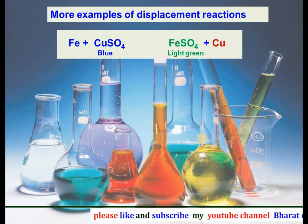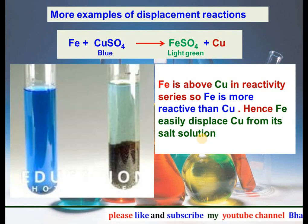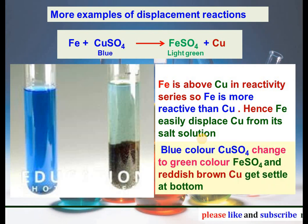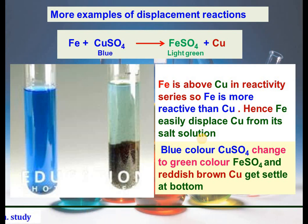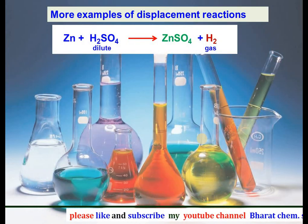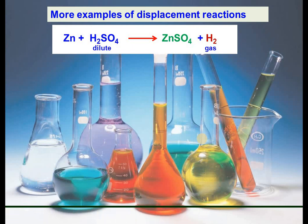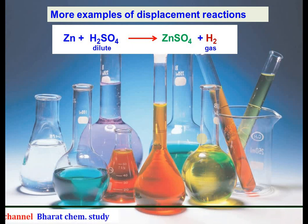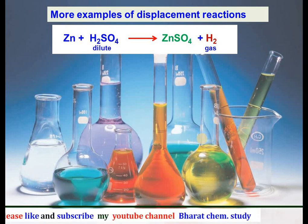Another example of displacement reaction: iron when added to copper sulfate gives ferrous sulfate plus copper. Iron is above copper in the reactivity series, so iron displaces copper from its salt solution. The observation is that the blue color of copper sulfate changes to the green color of ferrous sulfate and reddish-brown copper settles at the bottom. Similarly, when zinc reacts with sulfuric acid it forms zinc sulfate and hydrogen gas is liberated, because zinc is above hydrogen in the reactivity series.